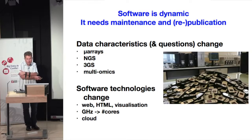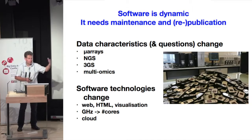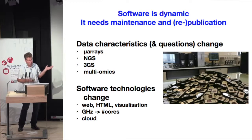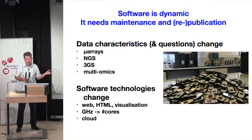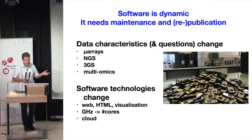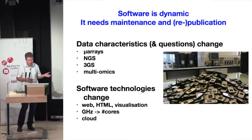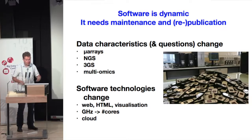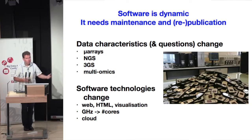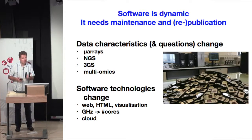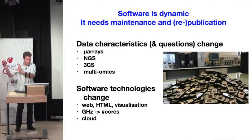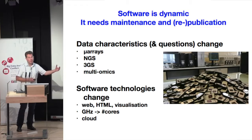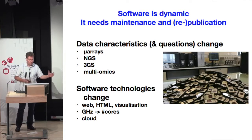Software is dynamic — it needs maintenance and re-publication. That's a big difference from a paper: once you put out a paper, you can more or less leave it. In our case, the data and the questions change so much and so rapidly that we have to keep updating things. When I started, microarrays were all the rage, then about ten years ago we had the next-generation sequencing revolution, and now third-generation sequencing is coming and multi-omics is getting more important. Data sizes are getting bigger overall. At the same time, software technology changes: every year the web becomes more usable and visualizations using interactive websites, 3D, and JavaScript get more powerful.